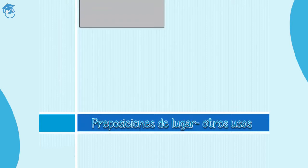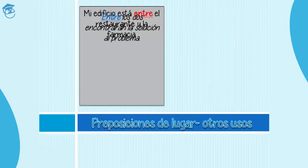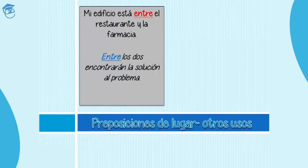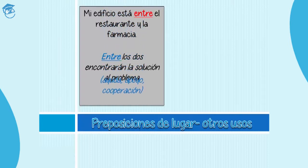Veamos otros usos y otros ejemplos. Mi edificio está entre el restaurante y la farmacia. Entre los dos encontrarán la solución al problema. In the first one, of course, it means in the middle — my building is in the middle between the restaurant and the pharmacy. But in the second one, it's not exactly between related to position. It's about the two people that are going to work together to find the solution to a problem. Here, entre is not between as position — it's the between talking about help, cooperation, support. Este entre es usado para indicar ayuda, apoyo, cooperación.